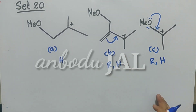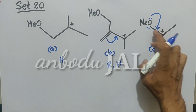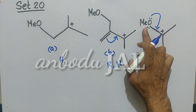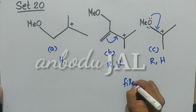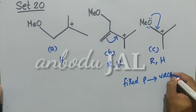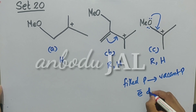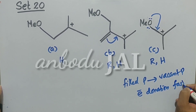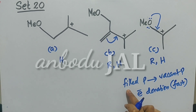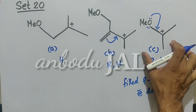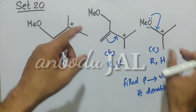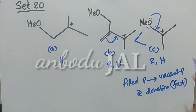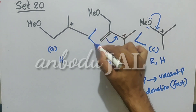Among B and C, which is more stable? In C, oxygen has a fully filled p-orbital and the carbon has a vacant p-orbital. Electron donation takes place from the filled p-orbital to the vacant p-orbital, so resonance will be faster in C than in B. So C is more stable than B, which is more stable than A.